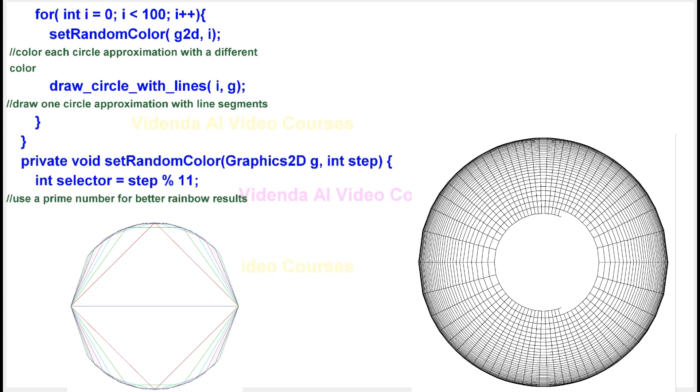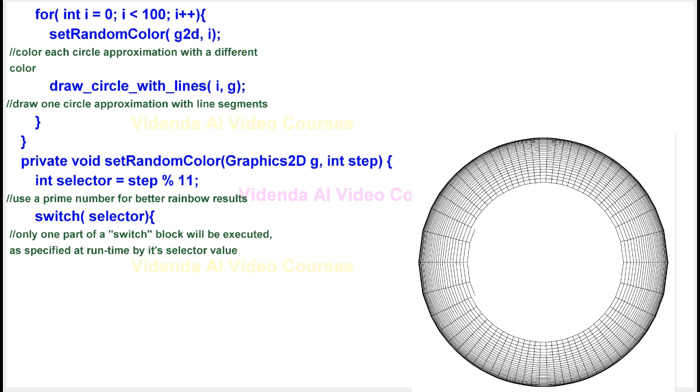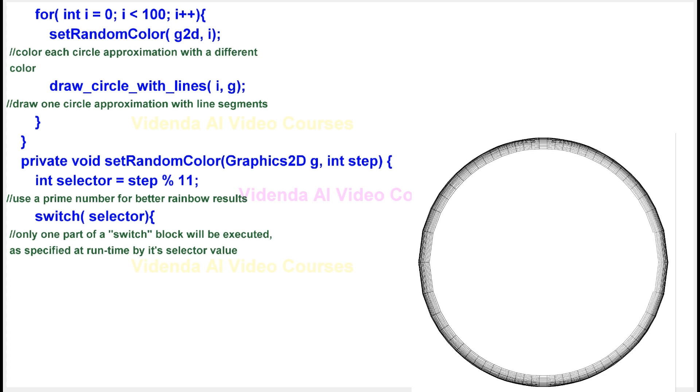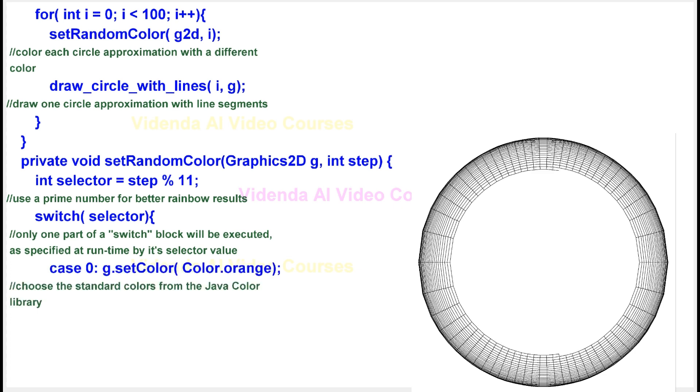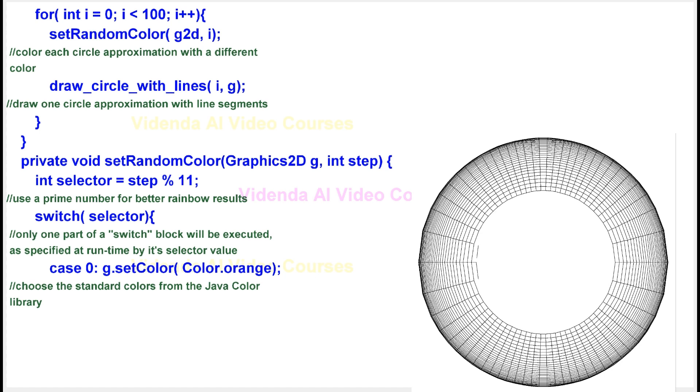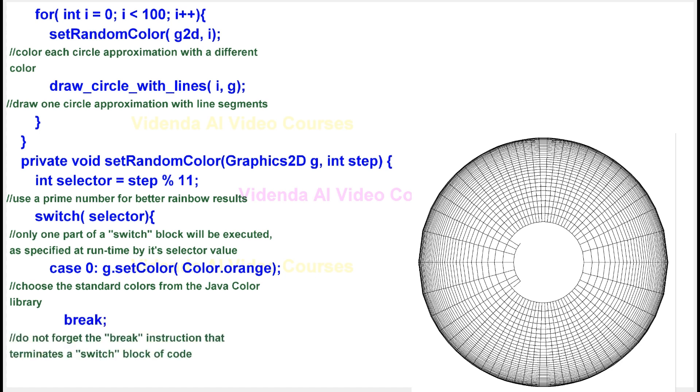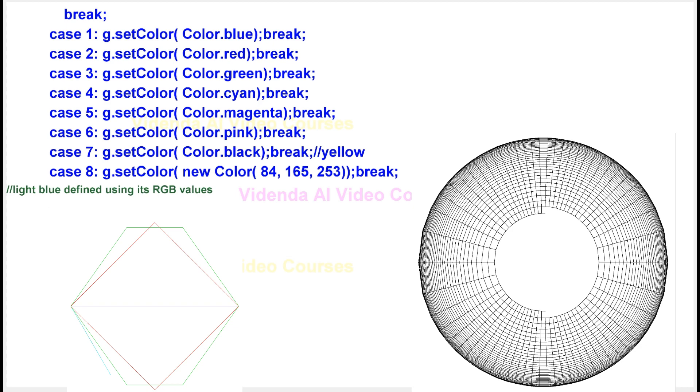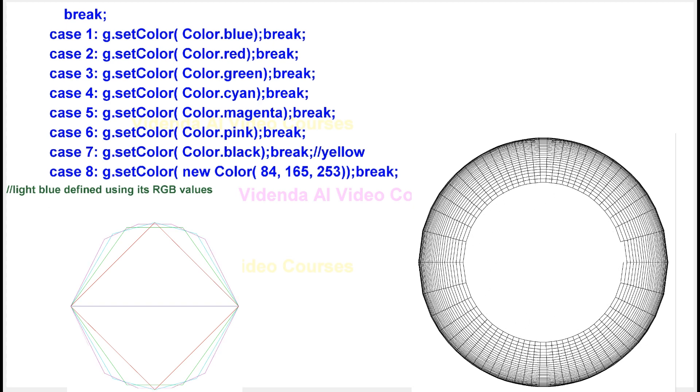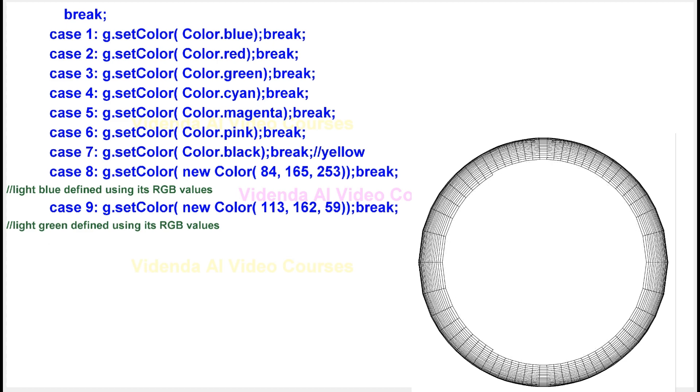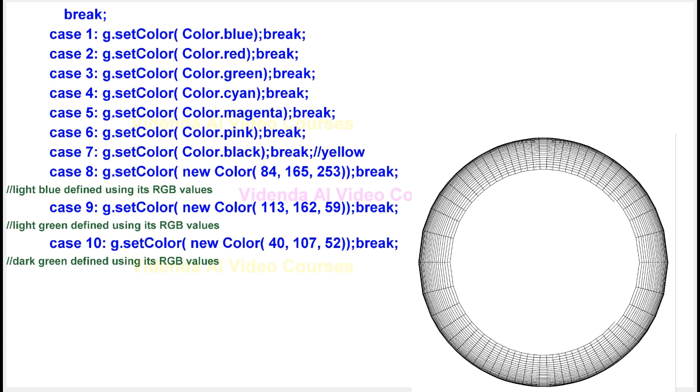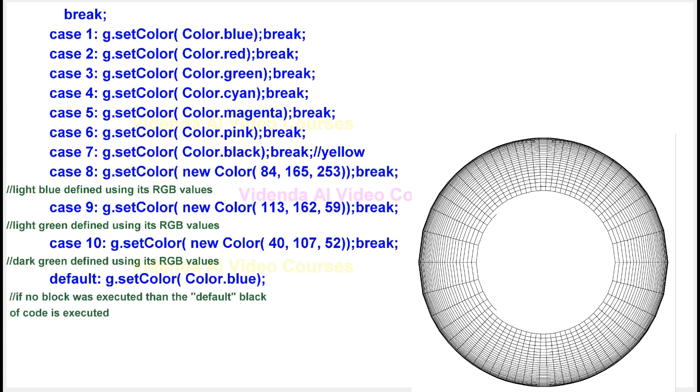Only one part of a switch block will be executed, as specified at runtime by its selector value. Choose the standard colors from the Java color library. Do not forget the break instruction that terminates a switch block of code. Create a switch block. Light blue, light green, dark green defined using RGB values. If no block was executed than the default block of code is executed.